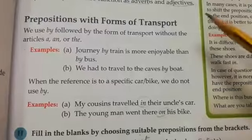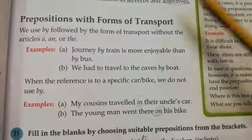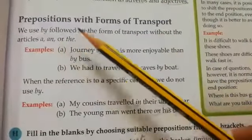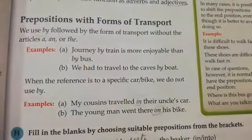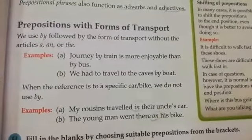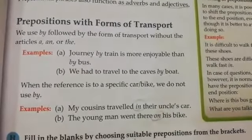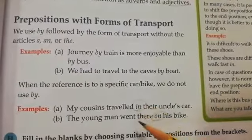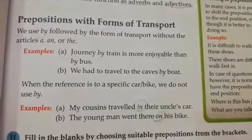So, it is clear that when we are talking about a transport without the article a, an, or the — transports which are not specific — then we use 'by'. And when we are talking about a specific transport, for example a bike or the car, then we use the articles which are suitable. For example, we travel in the car or we go on the bike.